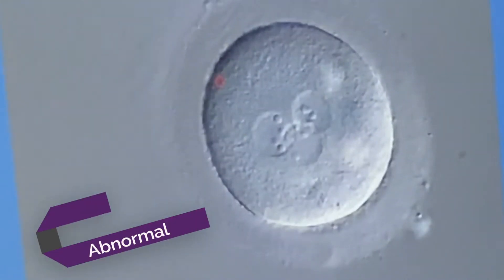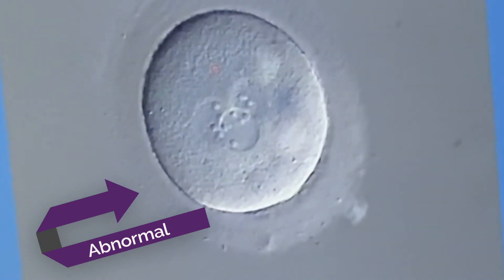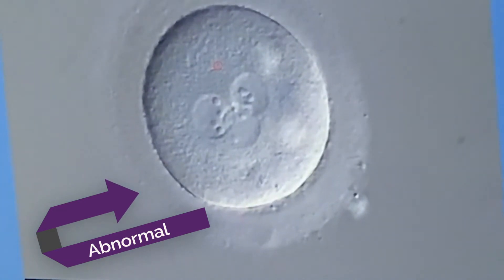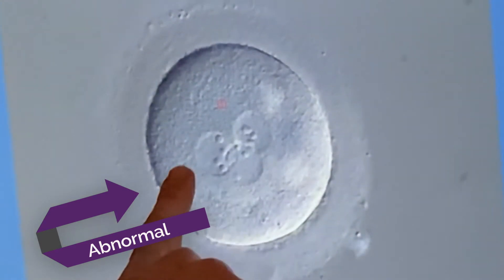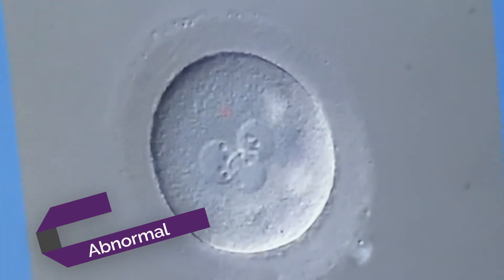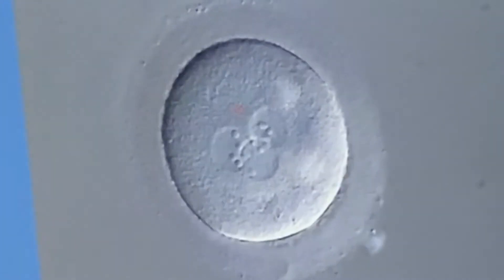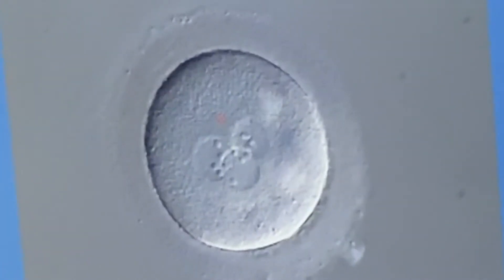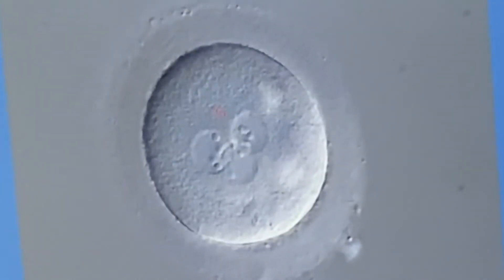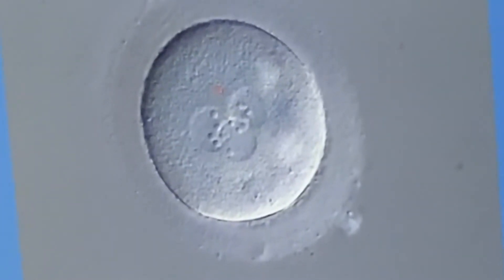The other condition we can have is abnormal fertilization, and this is an example of it here. You can clearly see we have three pronuclei, which indicates to us in the lab that abnormal fertilization has occurred. This abnormally fertilized oocyte will get discarded because it's genetically abnormal.